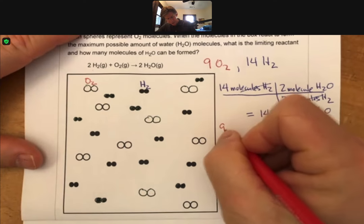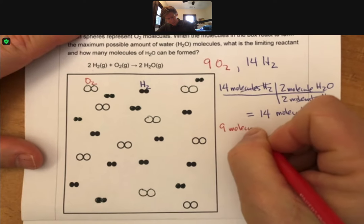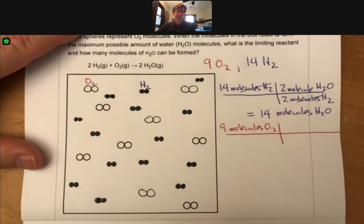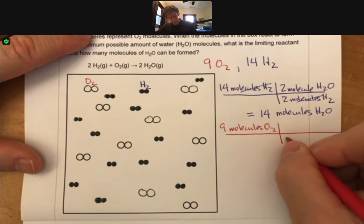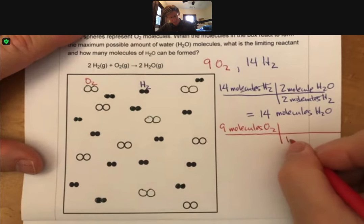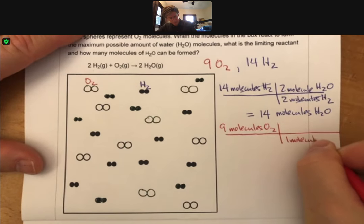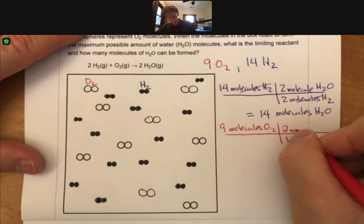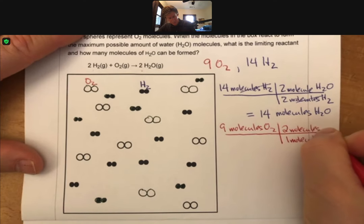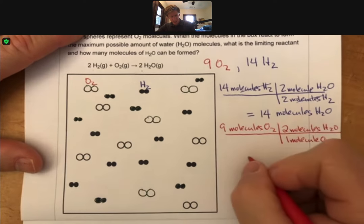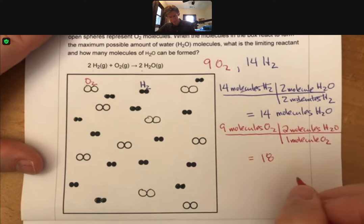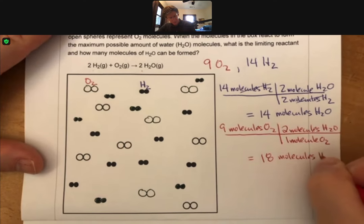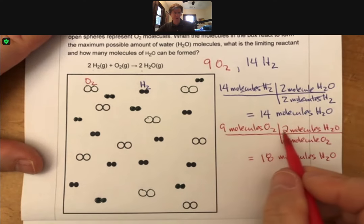Now we have 9 molecules O2, and we have for every 1 molecule O2, we form 2 molecules of H2O.